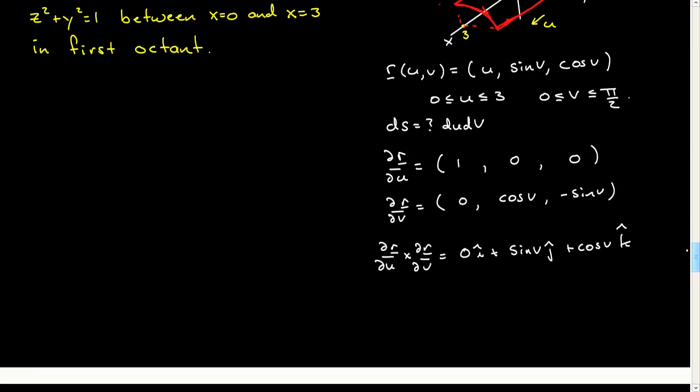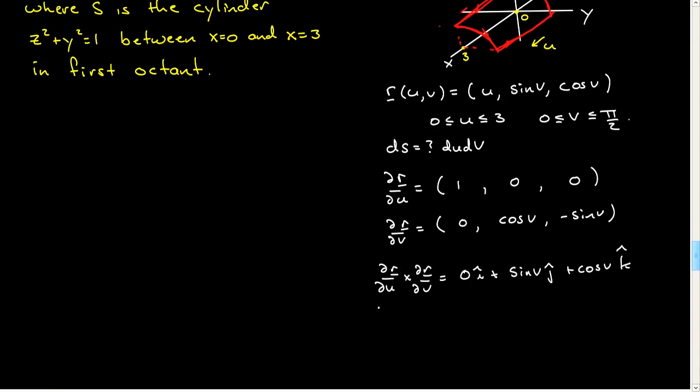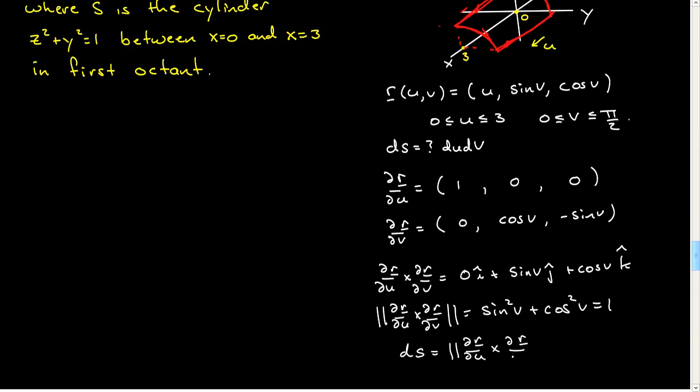So that's the cross product. I now need the modulus of this. And that will simply be sine squared plus cosine squared, which is 1. Which gives us that then ds, which is equal to this magnitude of this cross product, will be simply equal to 1, du dv. Of course, you don't need to write the 1, just du dv.